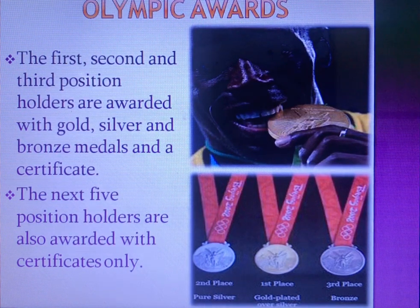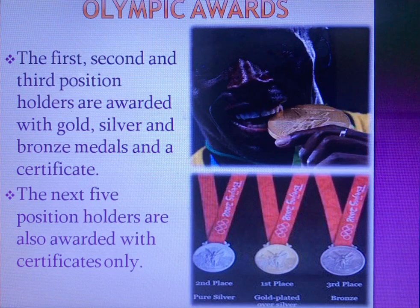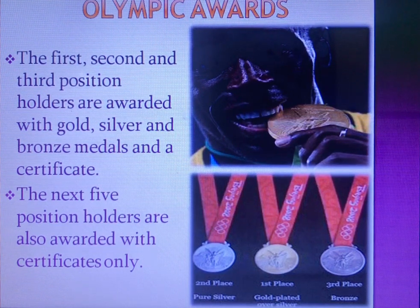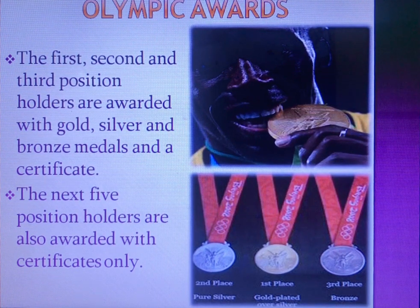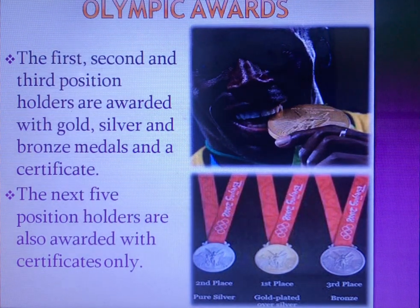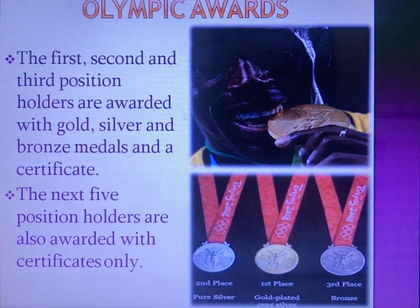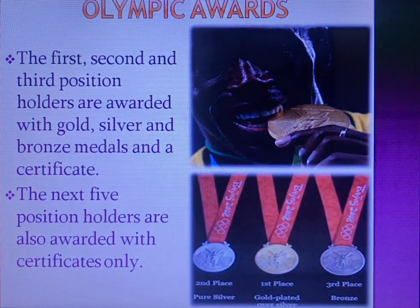There are three types of medals awarded in Modern Olympic Games: first place receives a gold medal, second place a silver medal, and third place a bronze medal — all with certificates. The next five position holders are also awarded certificates only. As mentioned, winning a medal or even just participating in the Olympic Games is a dream of each and every athlete around the world.